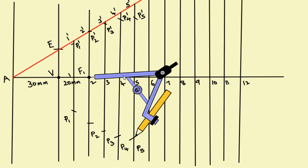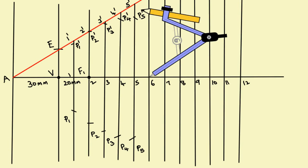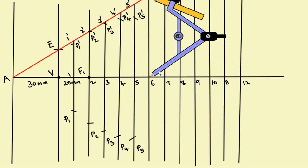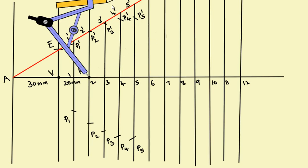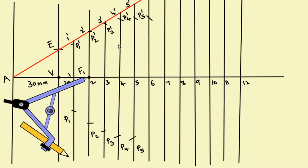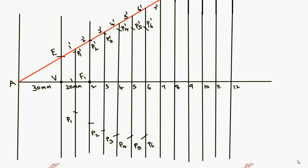Similarly, keep the compass at point 6, measure 6 to 6 dash. Keep compass at F1 and cut an arc on the 6–6 dash line. Continue cutting arcs on the remaining ordinate lines in the same way. In the last part we will get only one arc. Name these points P7, P7 dash, and so on.